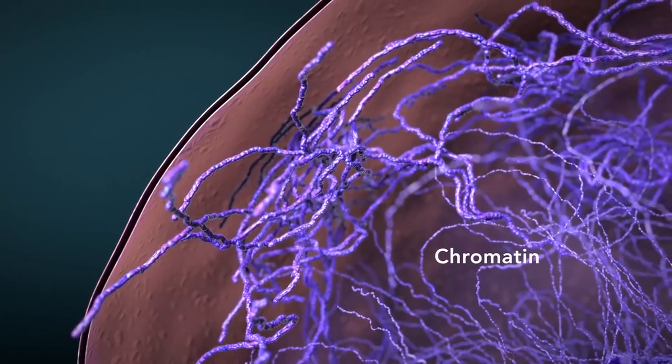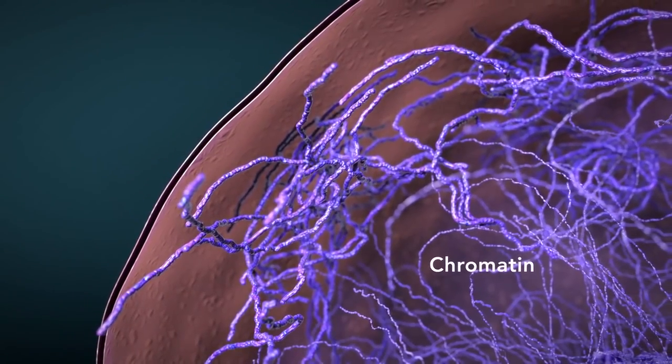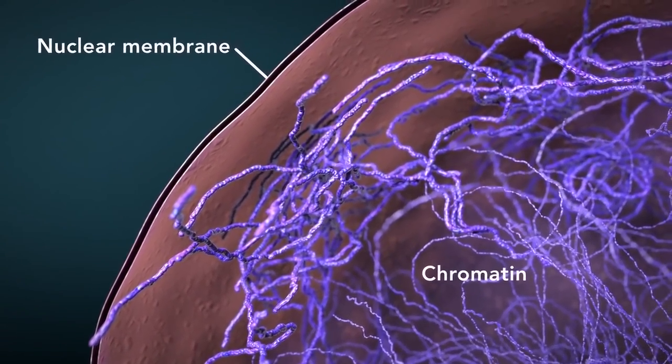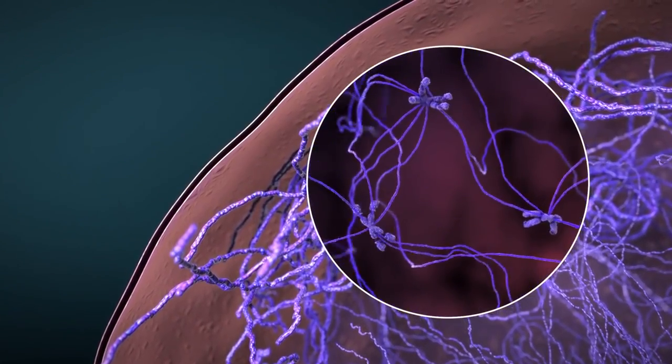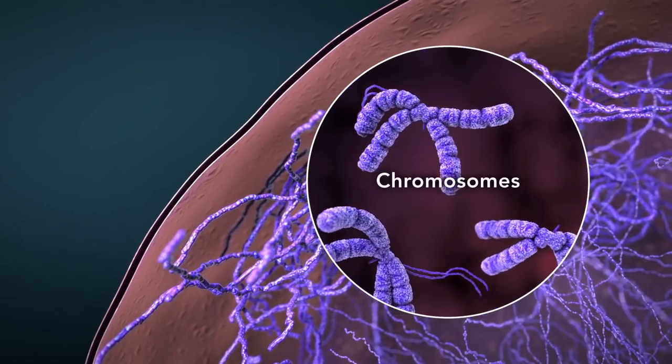Chromatin is the tangled spread out form of DNA found inside the nuclear membrane. When a cell is ready to divide, DNA condenses into structures known as chromosomes.